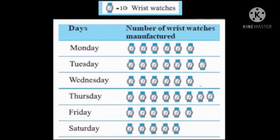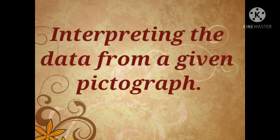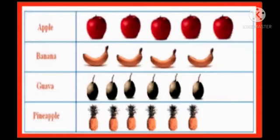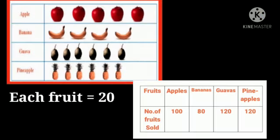Now let's see interpreting the data from a given pictograph. Now that we know how to make a pictograph, we should also know how to read or interpret one. Let us take an example of a fruit seller who sold different fruits as shown in the pictograph. Each picture represents 20 fruits. On the basis of that, let us complete the table.